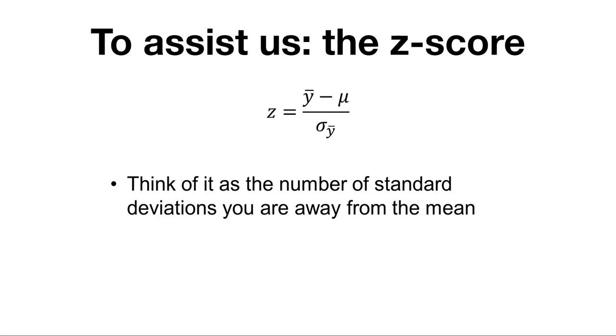And we'll have a z-table to help us to find out what z-scores are based on our data. Here, if we know the sample mean y bar, we can subtract the mean mu for the population and then divide by sigma sub y bar, or the standard error of y. We'll calculate the z-score in lots of examples.